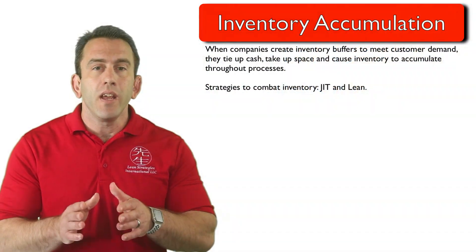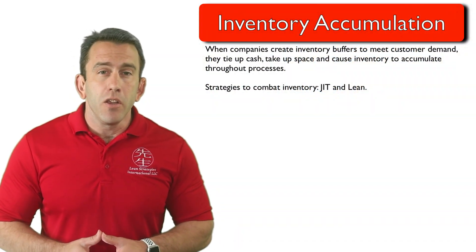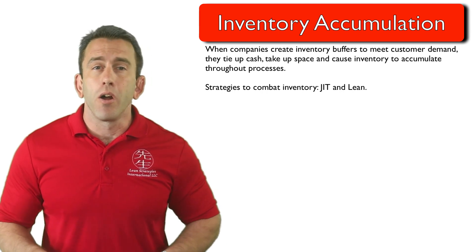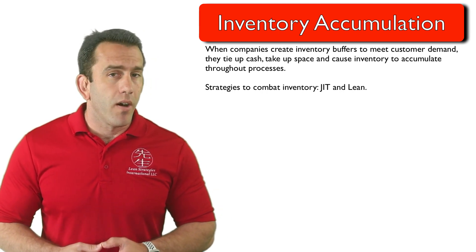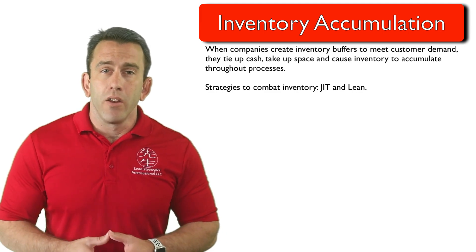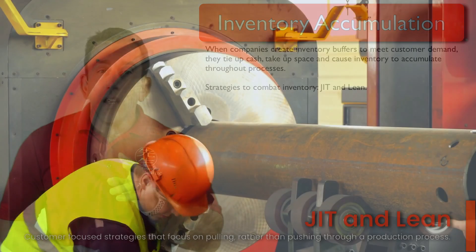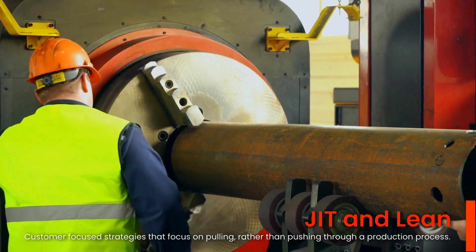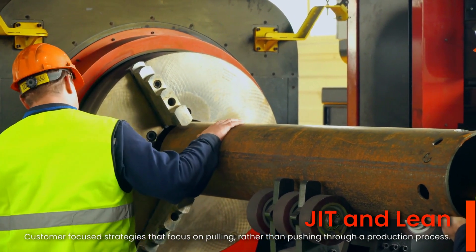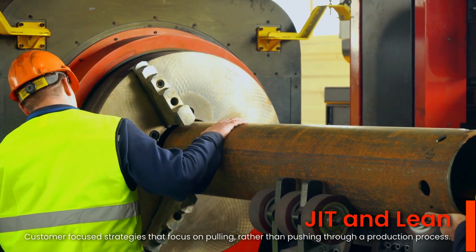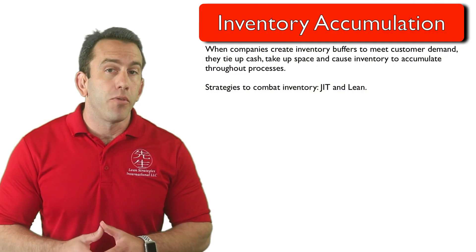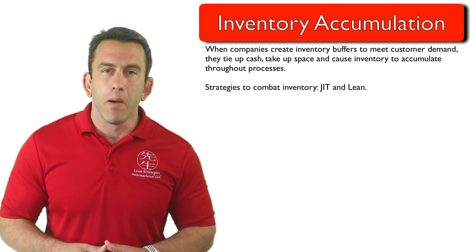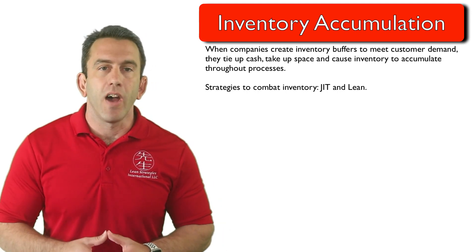These are two distinct strategies that have been used to deal with inventory buildup over a long period of time. Those two strategies are the just-in-time strategy and lean. These two strategies are customer-focused strategies that focus on pulling materials rather than pushing them through a production process. This in turn helps eliminate many of the causes of inventory buildup all throughout a company's value stream.